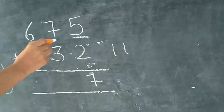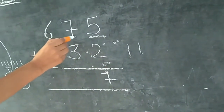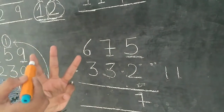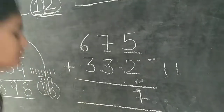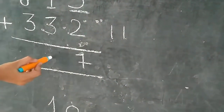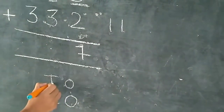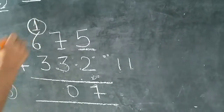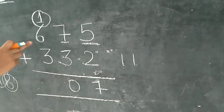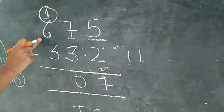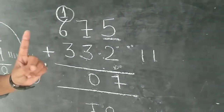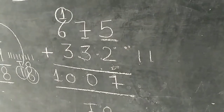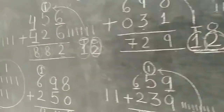7 and 3. 7 aur 3 go add karna hai. 7 is already right here. Isma 3 aur add karenge. Toh 7 aur ye 3 — 1 plus 6, 7. Aapko 3 aur add karna hai: 7, 8, 9, 10. So we write here 10. The answer is 1007.